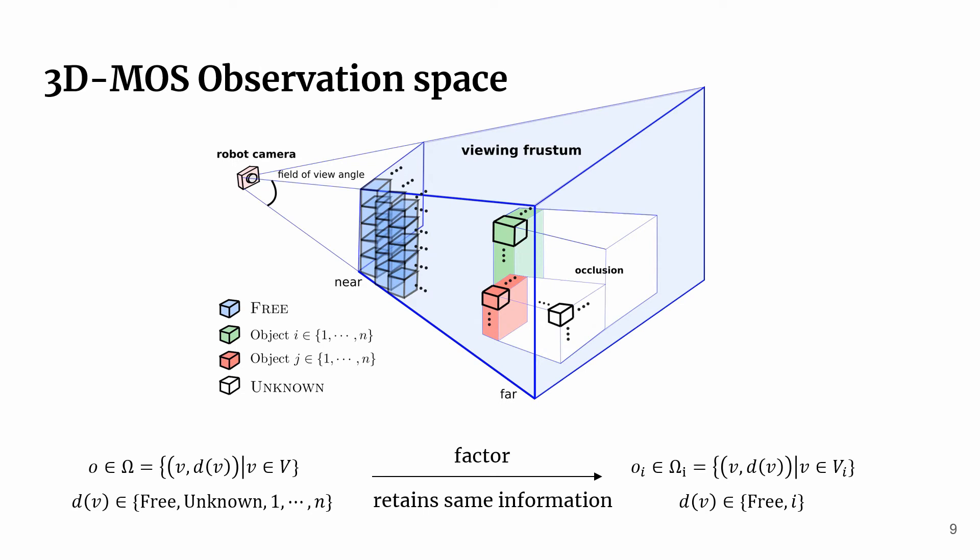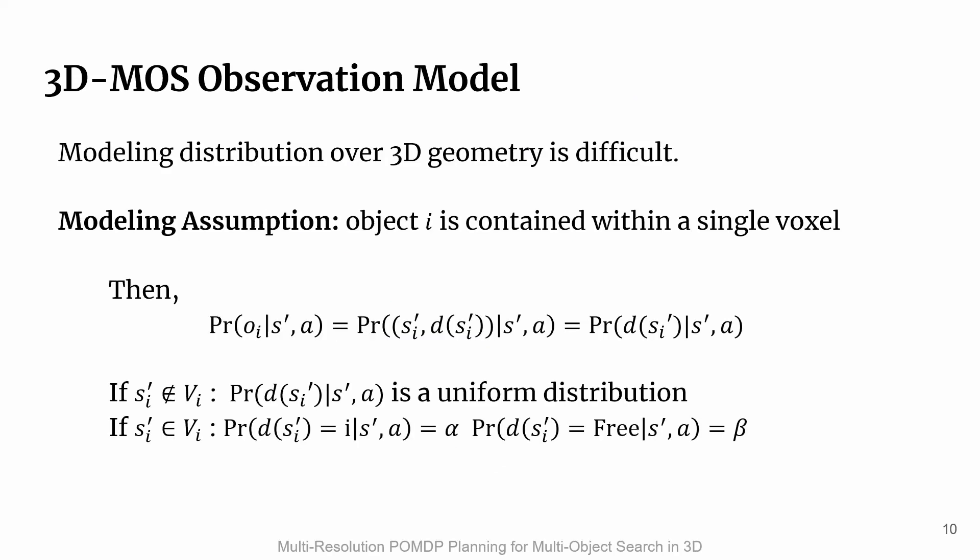The robot receives observations by projecting a viewing frustum through its mounted camera. We model the observation as a collection of voxel-label tuples, where the label could be either an object label (1 through n), free, or unknown. Free indicates the voxel is free space or occupied by an obstacle. Unknown indicates the voxel is occluded, containing no information about the environment. Under a given state, we can factor this observation by objects, where each observation for object i is a collection of voxel-label tuples with label only pertaining to object i. However, modeling distributions over 3D geometry is difficult. Instead, we make a simplifying assumption where object i is contained within a single voxel. This transforms the complex distribution of a voxel collection into the distribution over the label of a single voxel at the location of the object given in the state. We call this a per-voxel observation model.